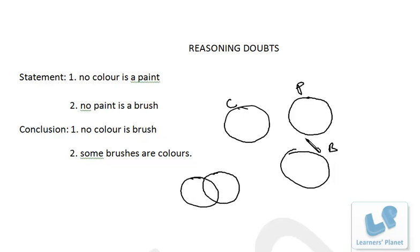It's very easy, you don't even need to draw Venn diagrams when the sets are disjoint sets. Color, paint - no color is a paint, disjoint set. No paint is a brush, disjoint sets. So among disjoint sets you cannot draw any conclusions, so neither conclusion one or two is true. I hope it's clear in your mind.